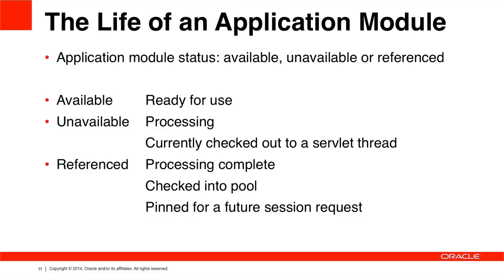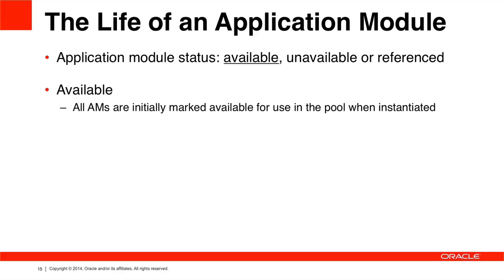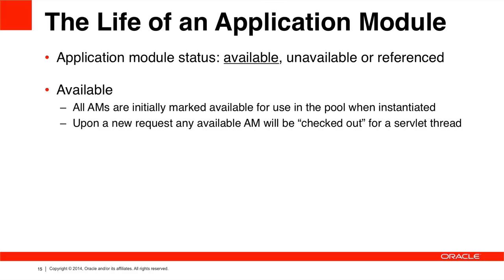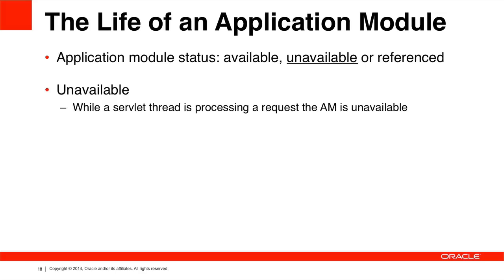An Available Application Module is an AM in the pool that is available to be used by a session. When an AM is first instantiated, this is the default status: Available. Setting jbo.ampool.initpoolsize to a value higher than the default of zero will result in that many available AMs in the pool when ADF starts. When a new session requests an Application Module, an Available AM is checked out of the pool and transitioned to an unavailable status. While the servlet thread is processing the session request, the AM will remain unavailable — this protects it from being reused mid-processing, which would obviously be a messy outcome.